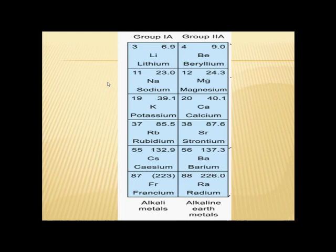The members of Group 1A are more reactive than Group 2A. Since francium, atomic number 87, is artificially prepared, cesium, atomic number 55, is the most reactive member of the alkali metals.